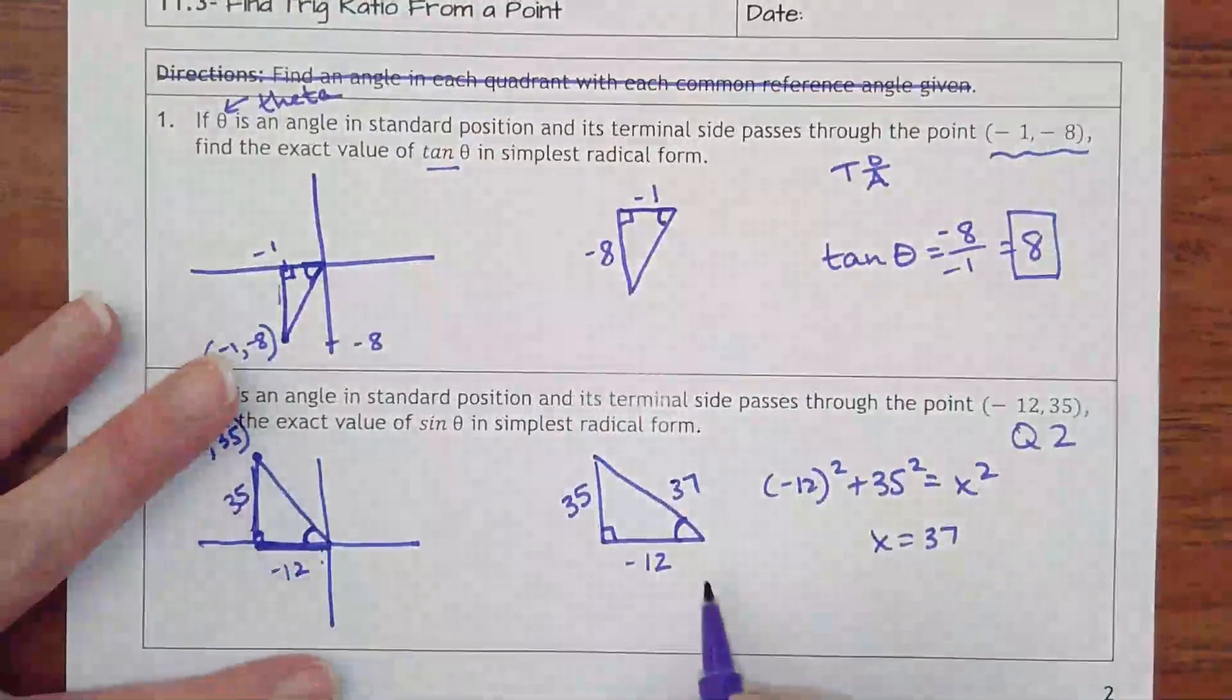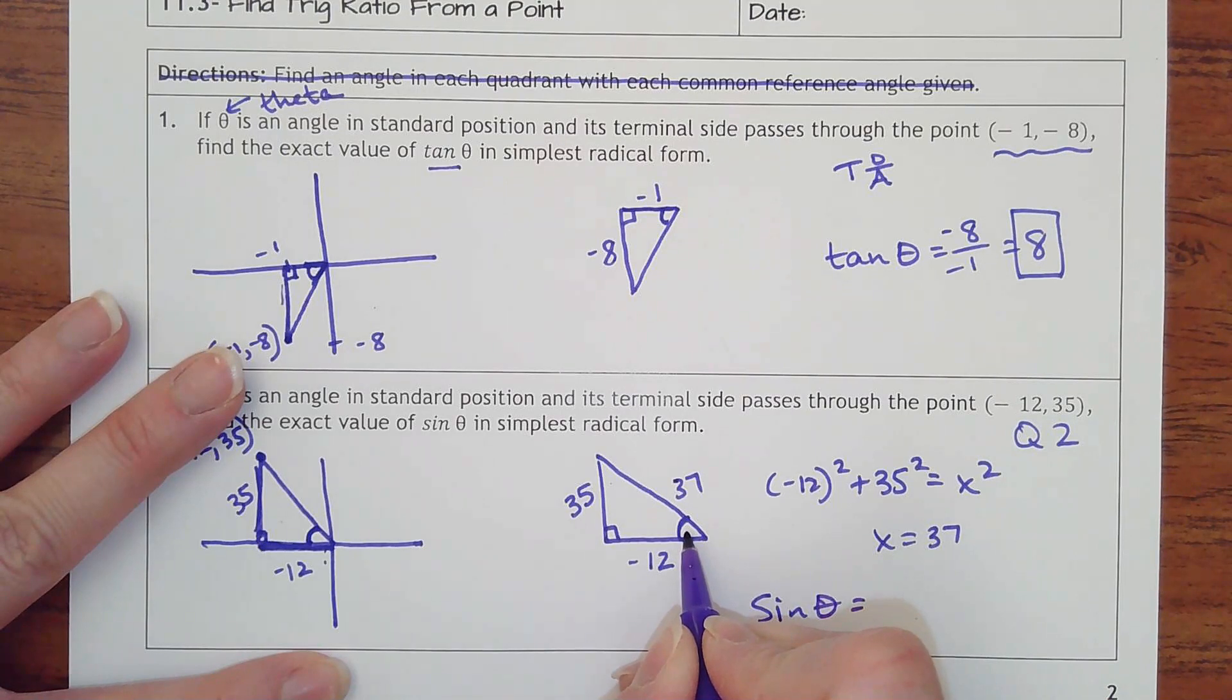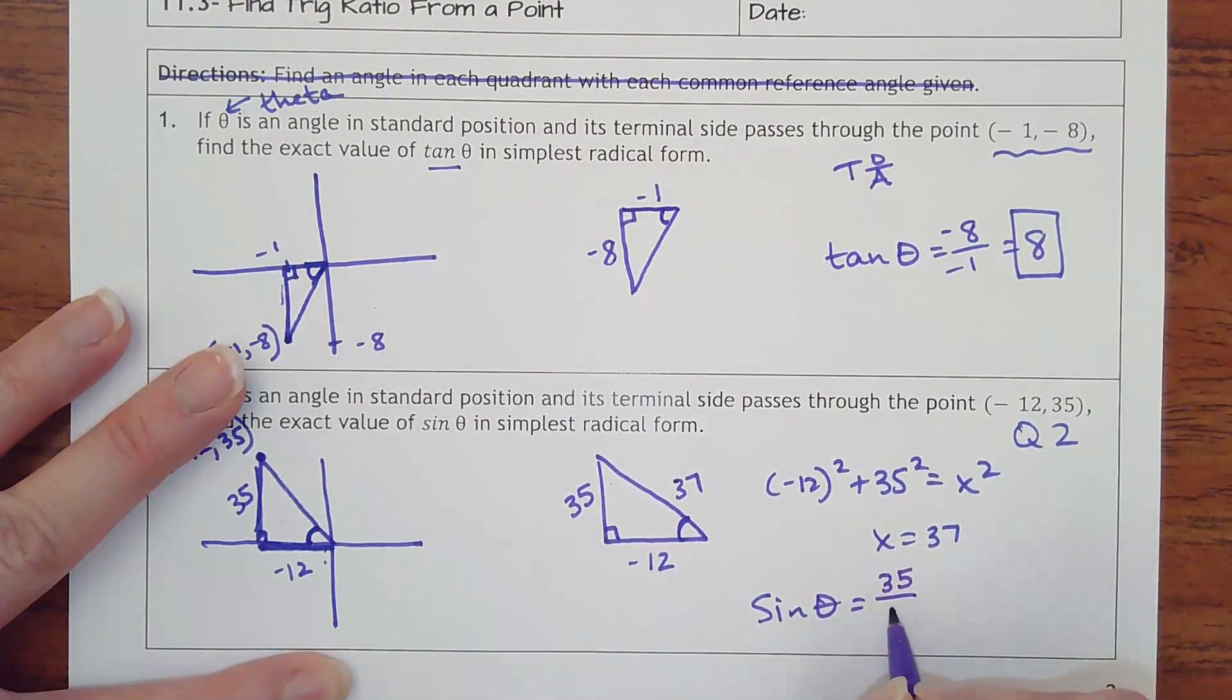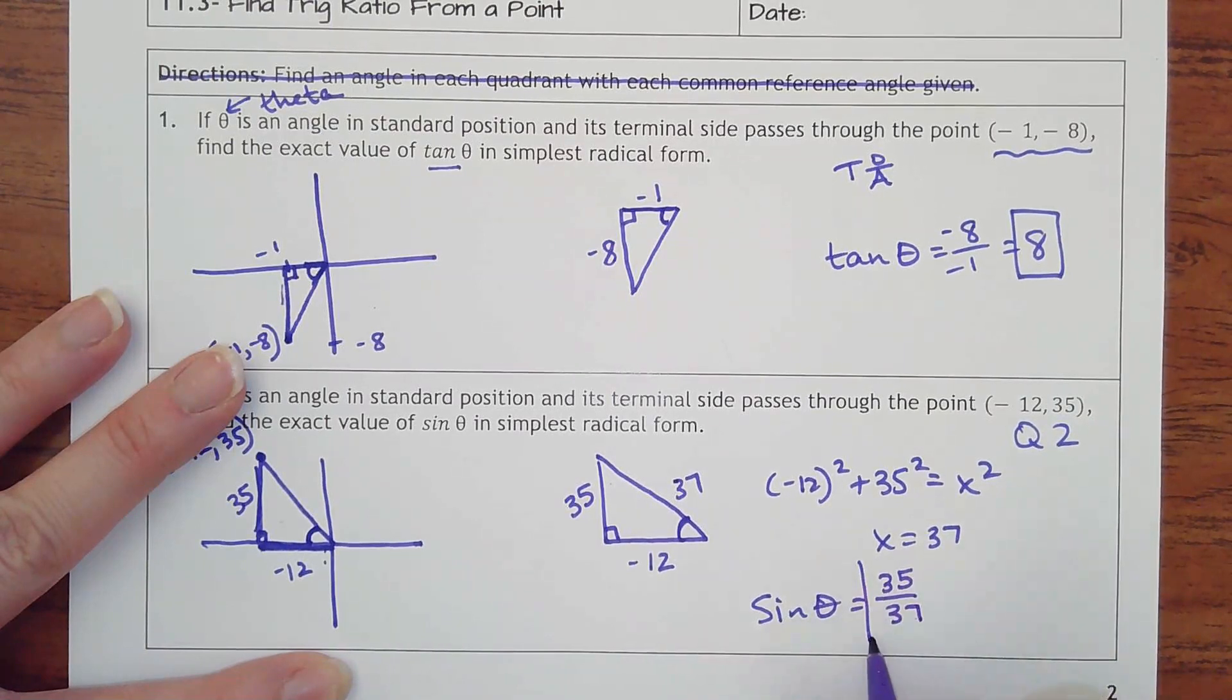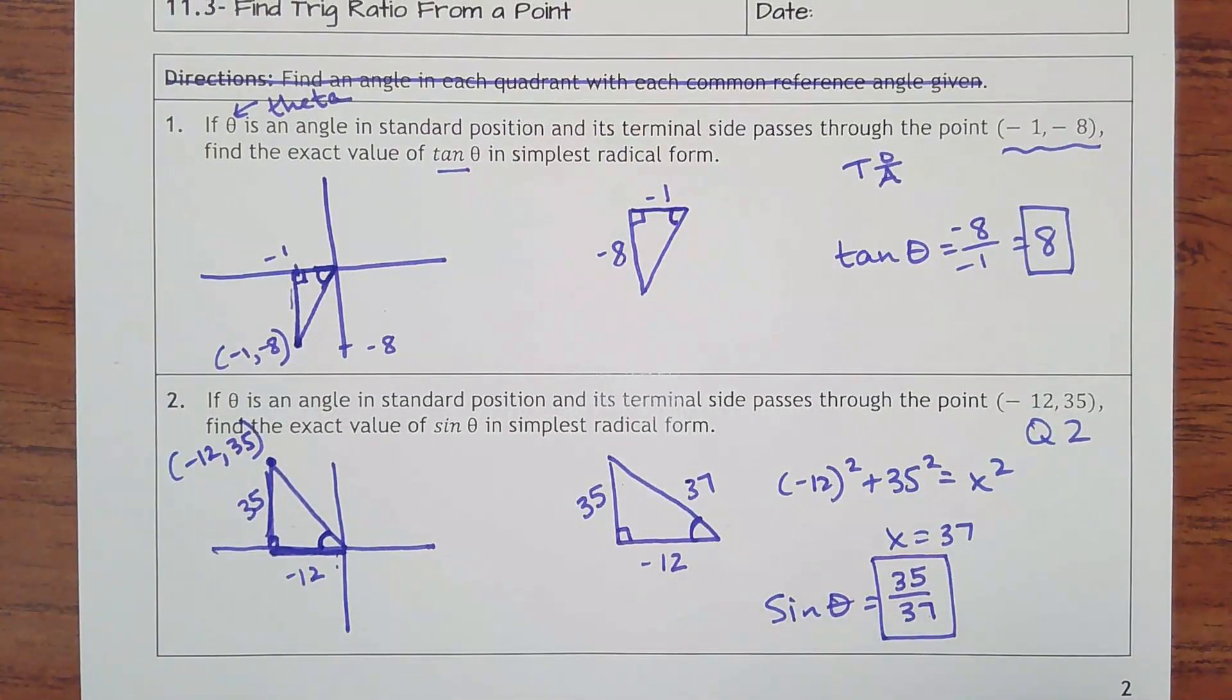Okay, so then from there, sine of my angle from here is opposite over hypotenuse, so 35 over 37 is what I would plug in. And this is going to be positive because I did not use the 12 which had the negative. I used my positive y, and then my hypotenuse will always end up being positive because in the Pythagorean theorem I'm squaring negative things which makes them positive.